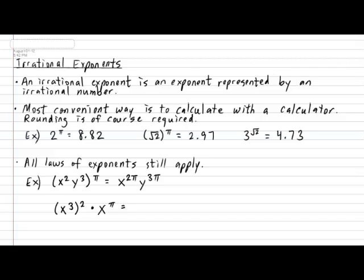Well, first things first: x cubed to the power of 2 gives us x to the power of 6. And when you multiply that by x to the power of π, remember that when you're multiplying and the base is the same, you add the exponents. So we get x to the power of 6 plus π, and just leave your answer like that.